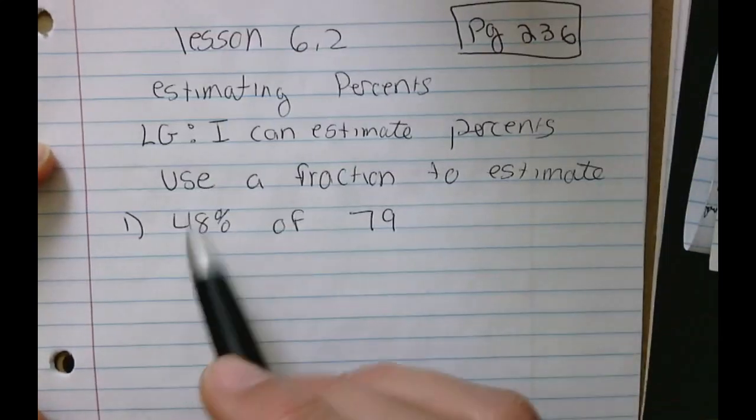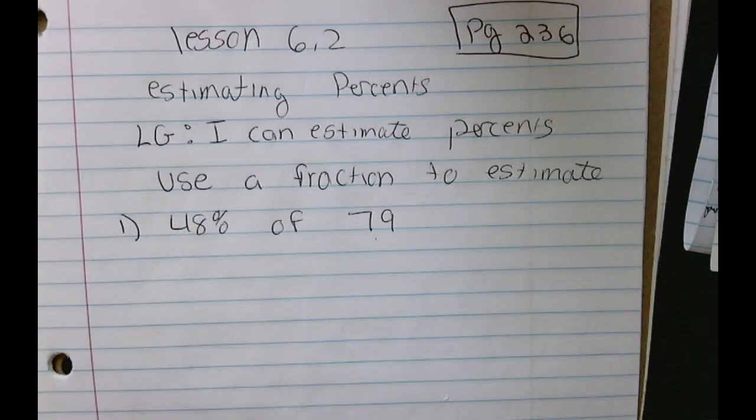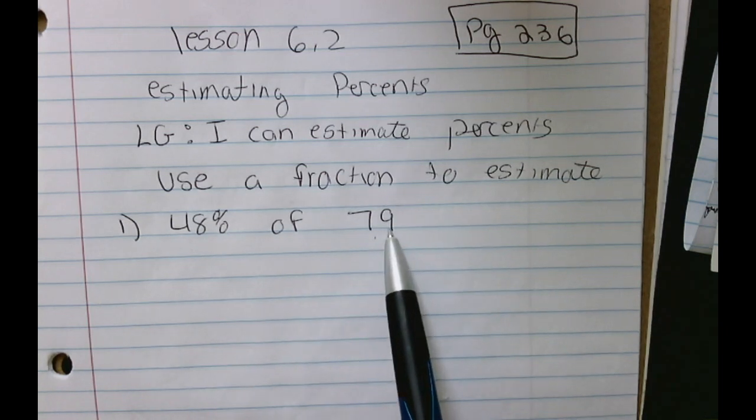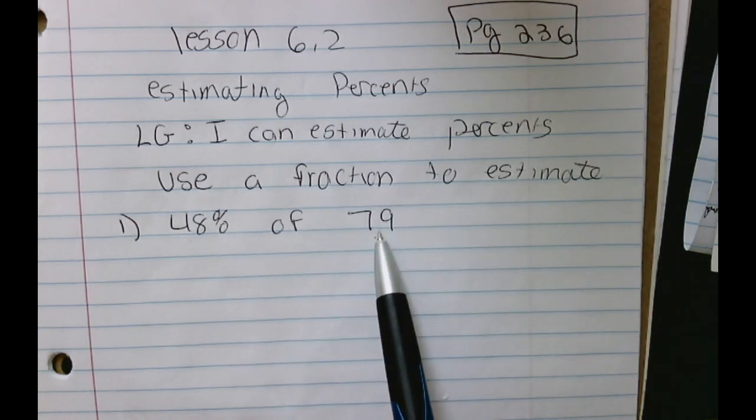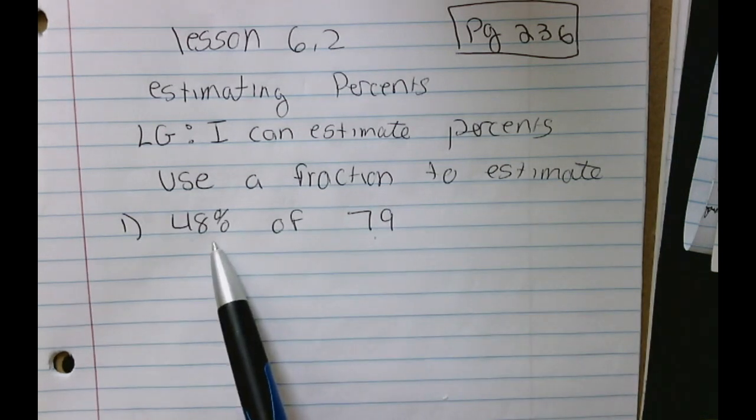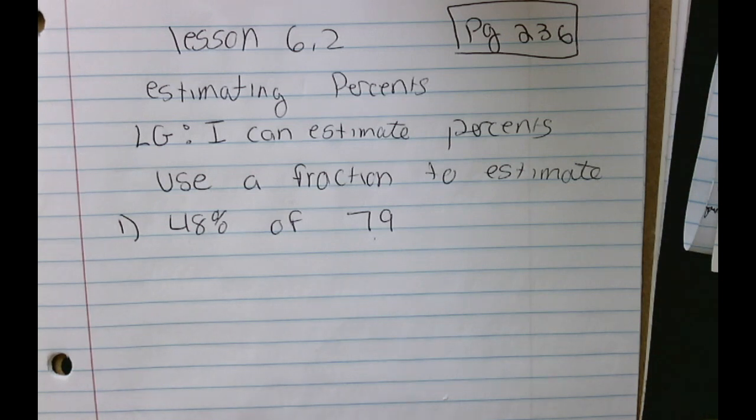So let's use a fraction to estimate. Estimating means an approximate amount. So it's not necessarily exact, but it's a great way to check your answer. And also, let's say that you went out shopping and you had to purchase something that was $79, and it was marked at 48% off. This would be a great idea to estimate how much of a discount you'd have. Approximate. So let's start.